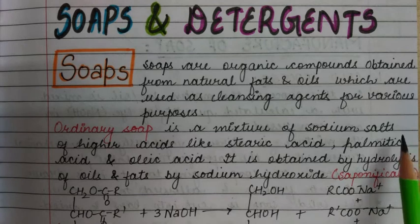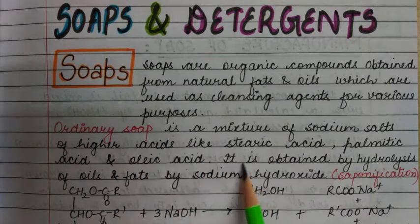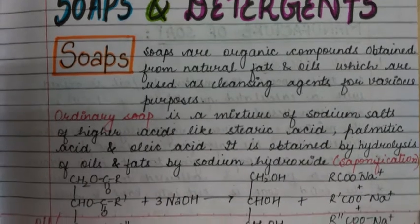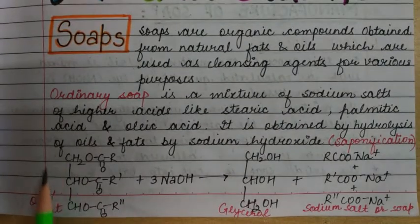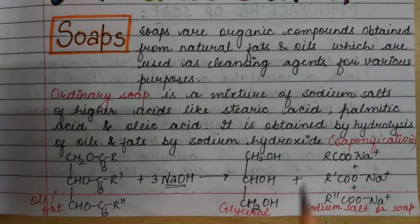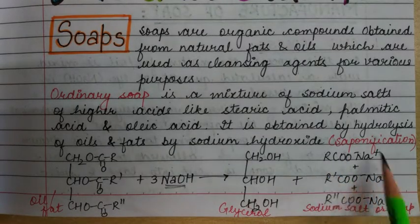Ordinary soap is a mixture of sodium salts of higher fatty acids like stearic acid, palmitic acid, and oleic acid. It is obtained by hydrolysis of oils and fats by sodium hydroxide, and this reaction is called saponification. For example, when we add sodium hydroxide to a fat or oil, glycerol is formed plus sodium salts, which is the soap.